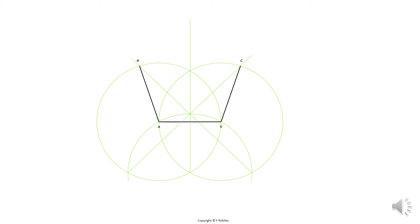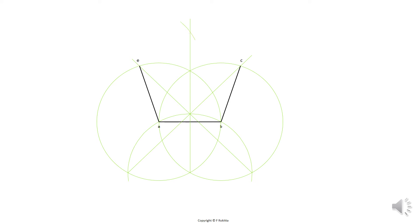We still need to label D. To determine point D we need to make use of our compass. Take the compass and stretch it to the length of line AB, which is the base length. Use this distance, place the compass at E and draw a light construction arc through the vertical line in the middle. Use the same distance from C and draw another small arc that intersects with the previous one on the vertical construction line.